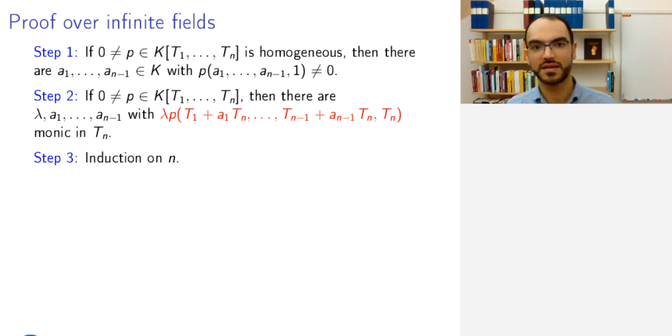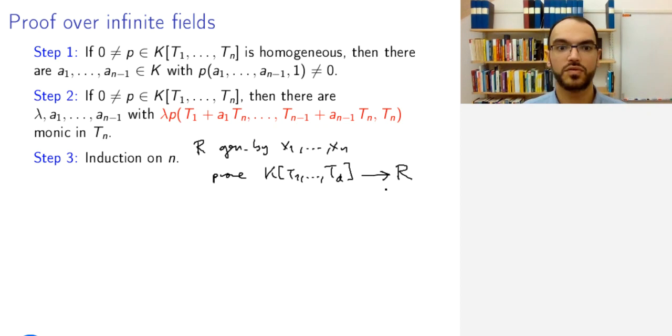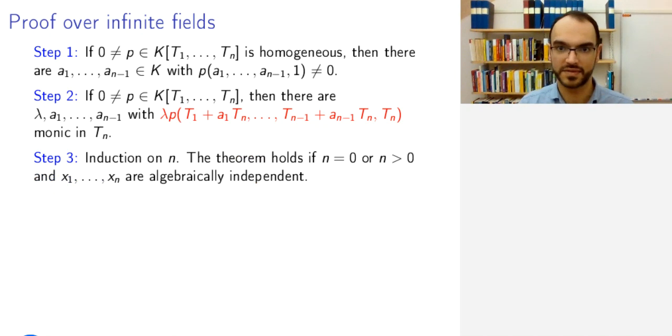So we'll prove it by induction on n. So what is n? Yeah, remember, we have our k-algebra R, which is generated by x1 to xn. And we want to prove that we have a finite ring extension from k[T1,...,Td] to R. So we will do induction on the number of generators. If there are no generators, then we just have the field and then we are done. The theorem is trivially true.